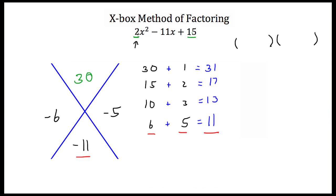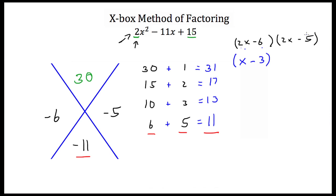Go back to my leading coefficient — I have a 2x squared. That means I have a 28x and a 28x, and then a minus 6 and a minus 5. Now you may notice that if I took 2x and multiplied it by 2x, I would get 4x squared, not 2x squared. The final step in the Xbox method is to reduce any of these binomials. This first one, 2x minus 6, I can take a 2 out of both of these, so this becomes x minus 3. The 2x minus 5 stays as is. The factored form is x minus 3 times 2x minus 5.